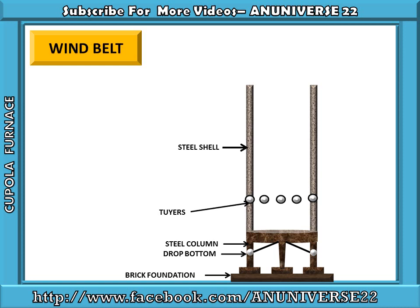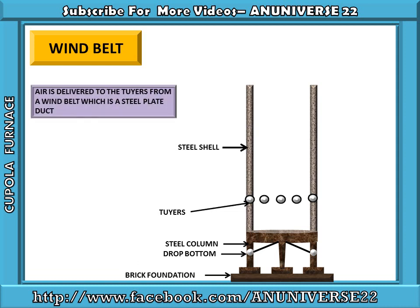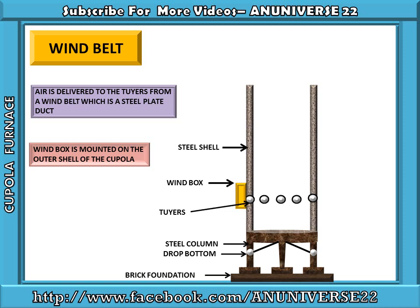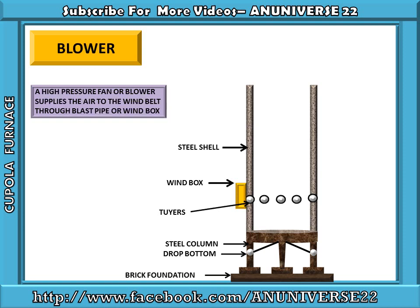Next is wind belt. Air is delivered to the tuyeres from a wind belt, which is a steel plate duct. The wind box is mounted on the outer shell of the cupola. This is the wind box through which air is supplied to the tuyeres. A high pressure fan or blower supplies the air to the wind belt through the blast pipe or wind box. Through this air blast inlet, air is supplied with the help of a blower to the wind box and from the wind box to the tuyeres, and this air is used for combustion of fuel.